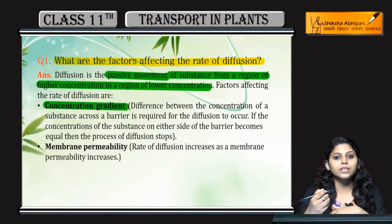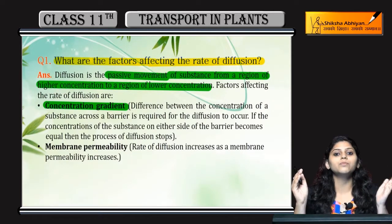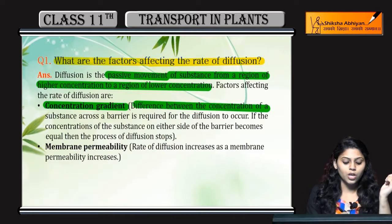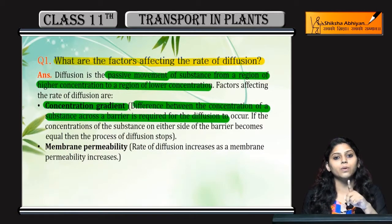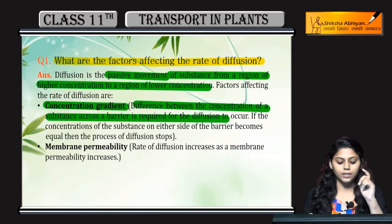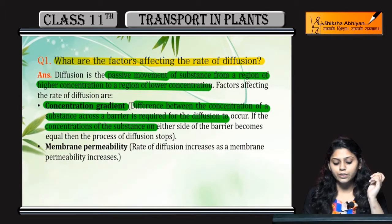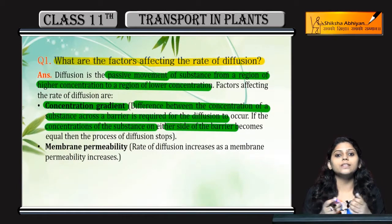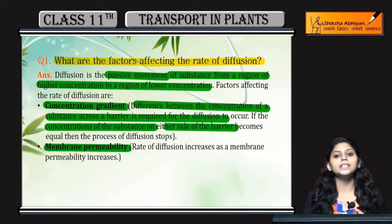The first factor is concentration gradient. A difference in the concentration of a substance across a barrier is required for diffusion to occur. If the concentration of the substance on either side of the barrier is equal, then diffusion will not happen.